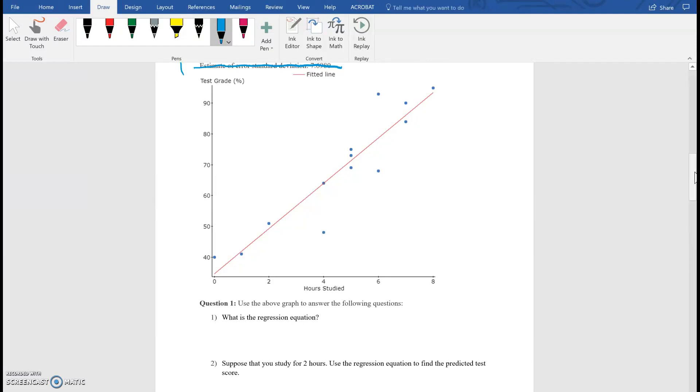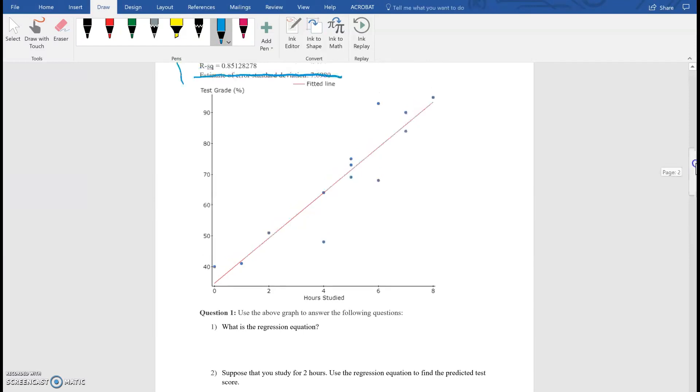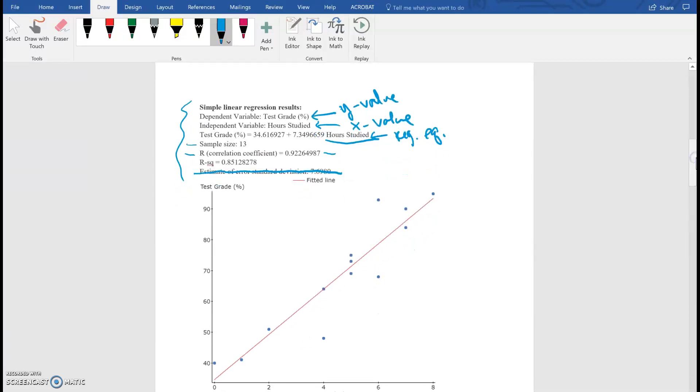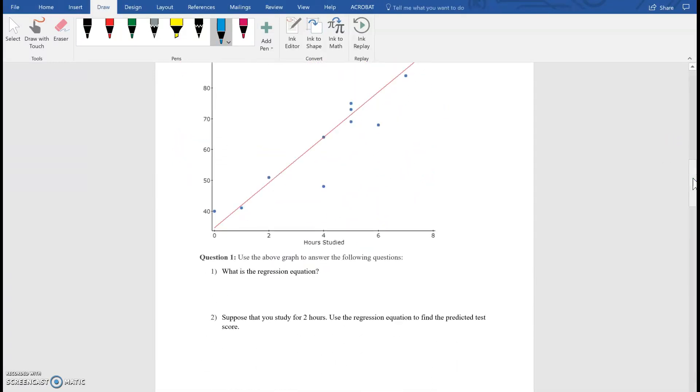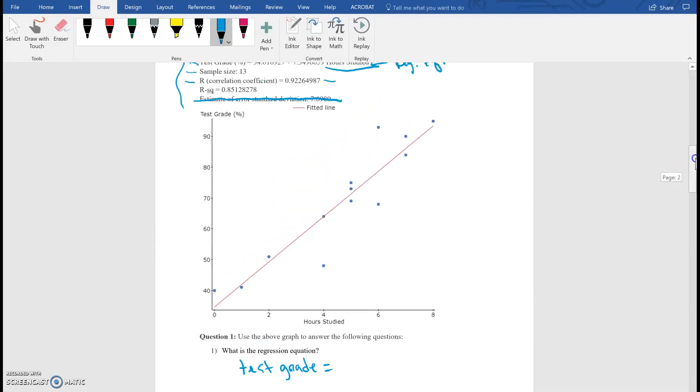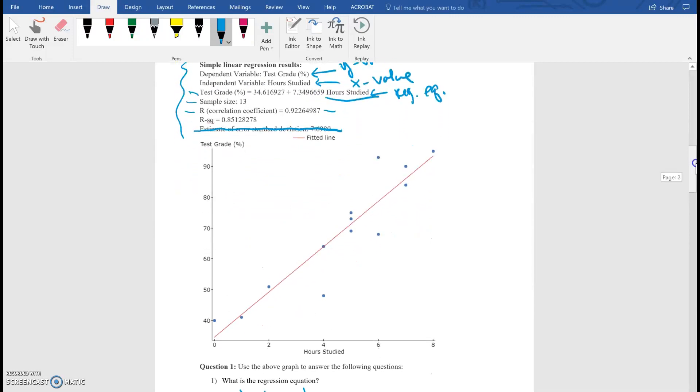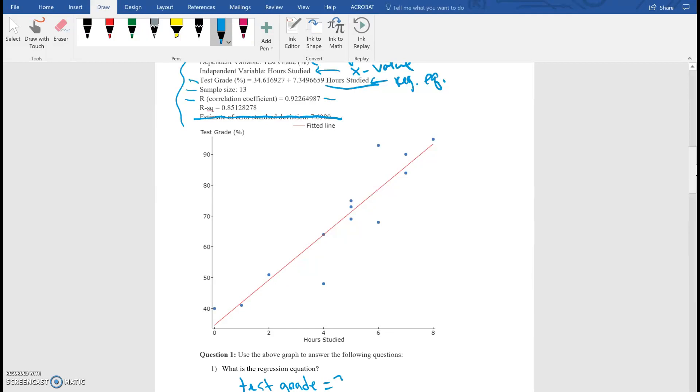So what is the regression equation? That is already given to us. If you go back up to the output, the regression equation is already right here. It's the third one. So we're going to write all of that down. We're going to write test grade. Test grade equals, and I'm going to write it to two decimal places. So 34.6 plus 7.35 and then I'm just going to write hours studied.